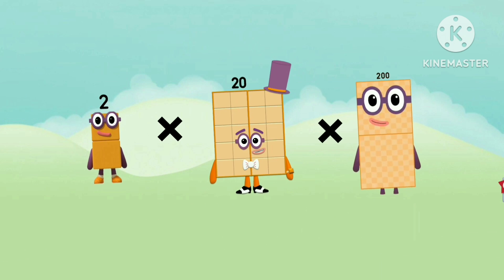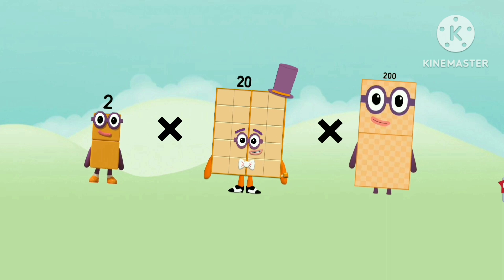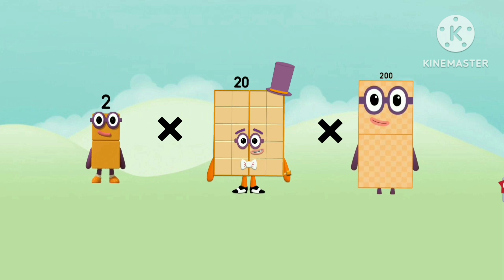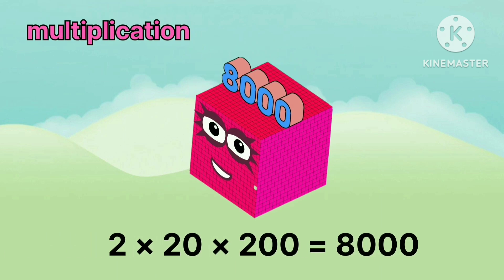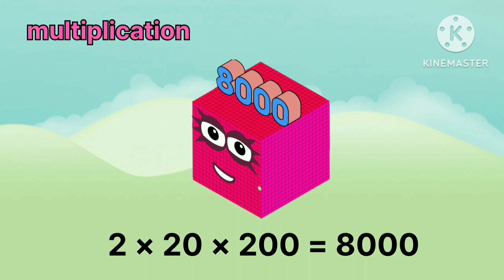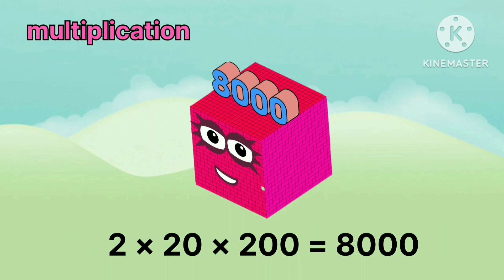2. Multiply by 20. Multiply by 200. Equals 8000.